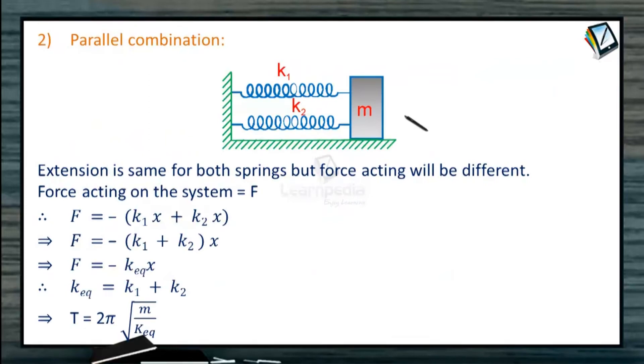So next is the parallel combination. In case of parallel combination, what you can see is that suppose there are two springs only this time, same as in the diagram. And if we extend this combination by X, then we know that same extension will be there for both the springs K1 and K2.